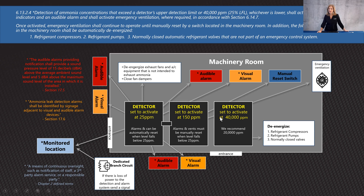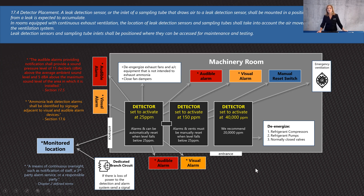Once you hit a 40,000 ppm measurement, nobody will be able to get into that room — it will be unbearable and dangerous, and there's risk of explosion. So in addition to signaling alarms and turning on emergency ventilation, you also have to de-energize anything that could cause a spark. The actual code quotes and references are available if you want to look those up.